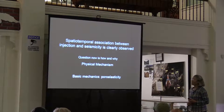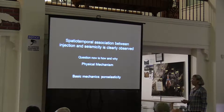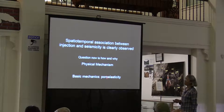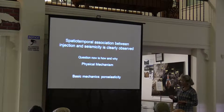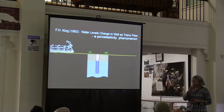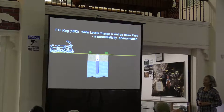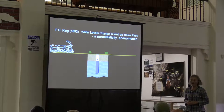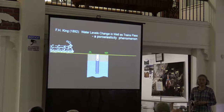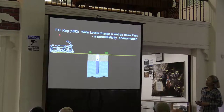The basic theory we use is poroelasticity. Poroelasticity has two parts: 'poro' is related to water, and 'elasticity' is related to rock deformation. One of the earliest poroelasticity phenomena was observed in 1892 by Mr. King, who lived on a farm in Wisconsin. He observed the phenomenon and it was reported in a USGS publication.